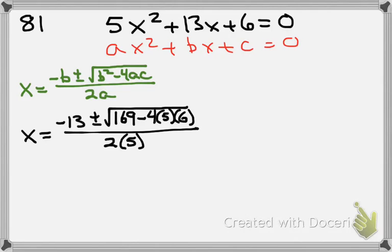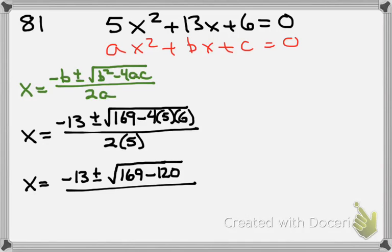So X equals negative 13, plus and minus the square root of 169 minus 120, all over 10.